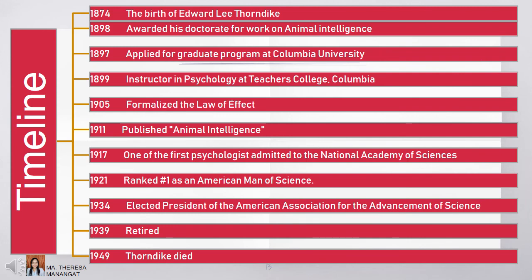A timeline of Edward Lee Thorndike's life: He was born in 1874. In 1897, he applied for a graduate program at Columbia University. In 1898, he was awarded his doctorate for work on animal intelligence. In 1899, he served as an instructor in psychology at Teachers College of Columbia. In 1905, he formalized the law of effect. In 1911, he published his book titled Animal Intelligence. In 1917, he was one of the first psychologists admitted to the National Academy of Sciences. In 1921, he ranked number one as an American man of science. In 1934, he was elected president of the American Association for the Advancement of Science. He retired in 1939 and died in 1949.